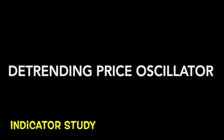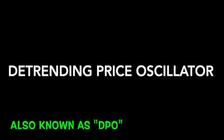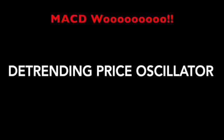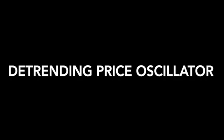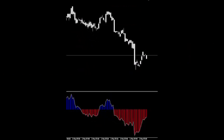This week's technical analysis video revolves around an oscillating histogram called the Detrending Price Oscillator. Interestingly enough, it finds its roots in an older indicator — many of you probably know about the MACD indicator developed by Gerald Appel. The Detrending Price Indicator was first calculated by William Blau in 1991 and coded for MT4 many years later.